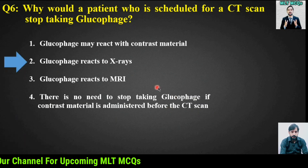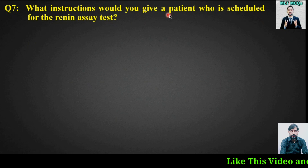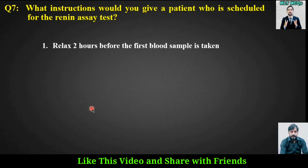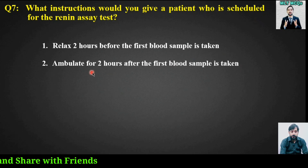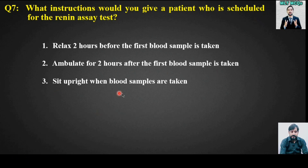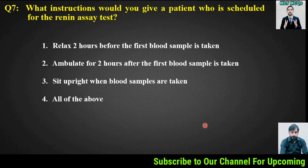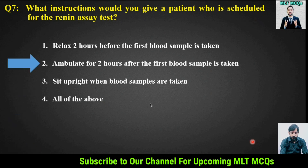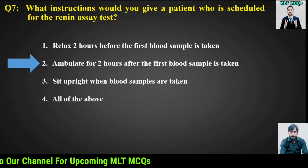The right answer is option 2 — glucophage reacts to x-rays. MCQ number 7: What instructions would you give a patient who is scheduled for the renin assay test? Options are: relax 2 hours before the first blood sample is taken; ambulate for 2 hours after the first blood sample is taken; sit upright when blood samples are taken; or all of the above. The right answer is option 2 — ambulate for 2 hours after the first blood sample is taken.